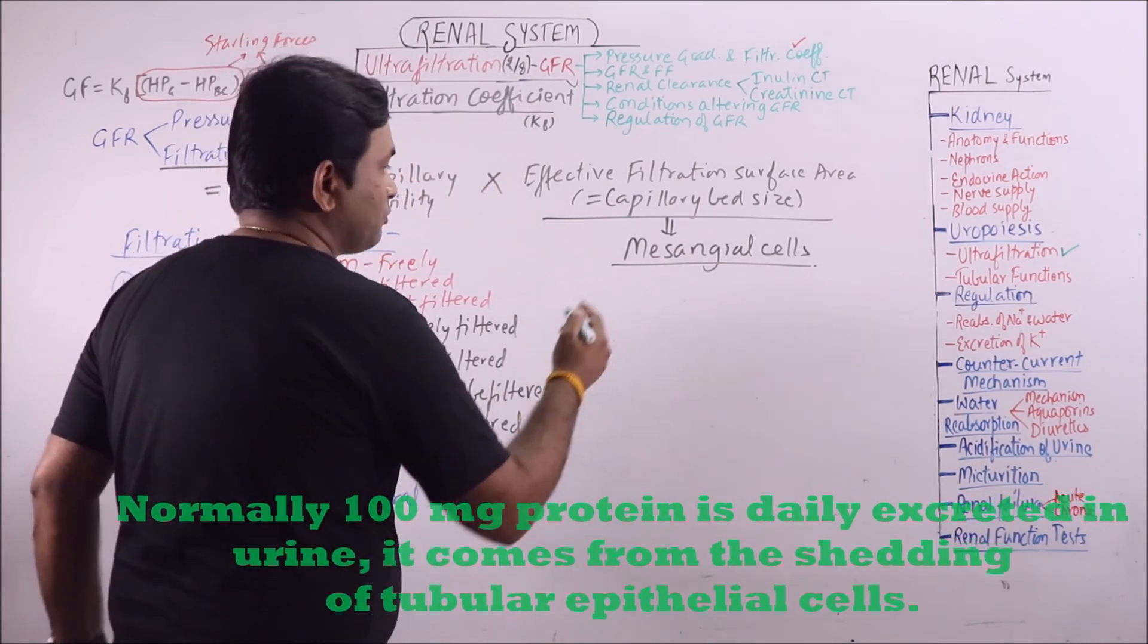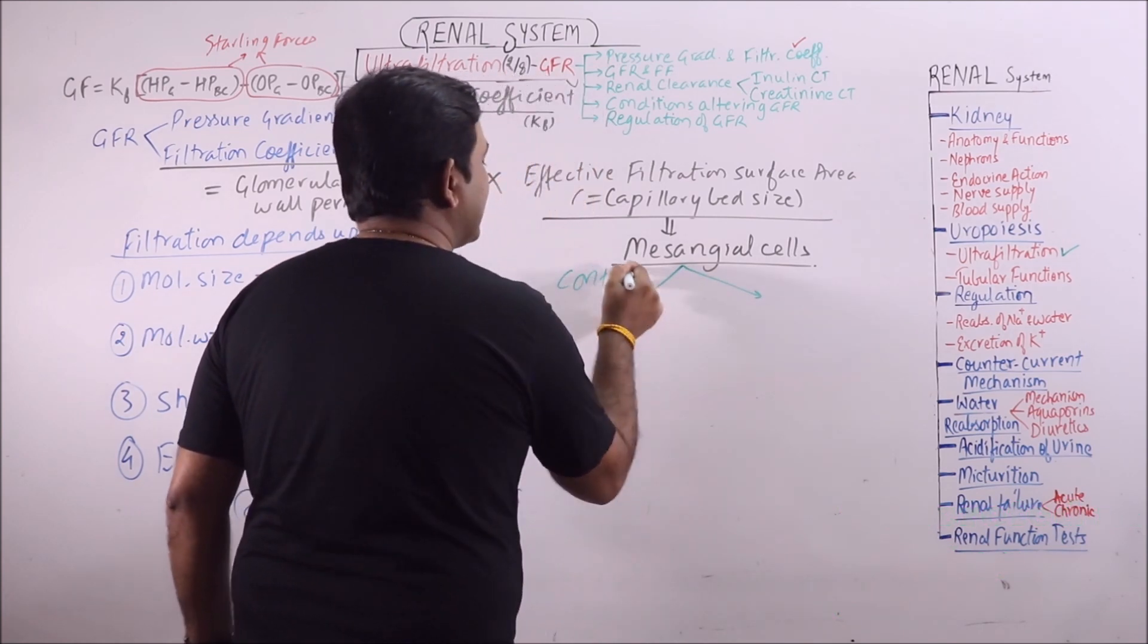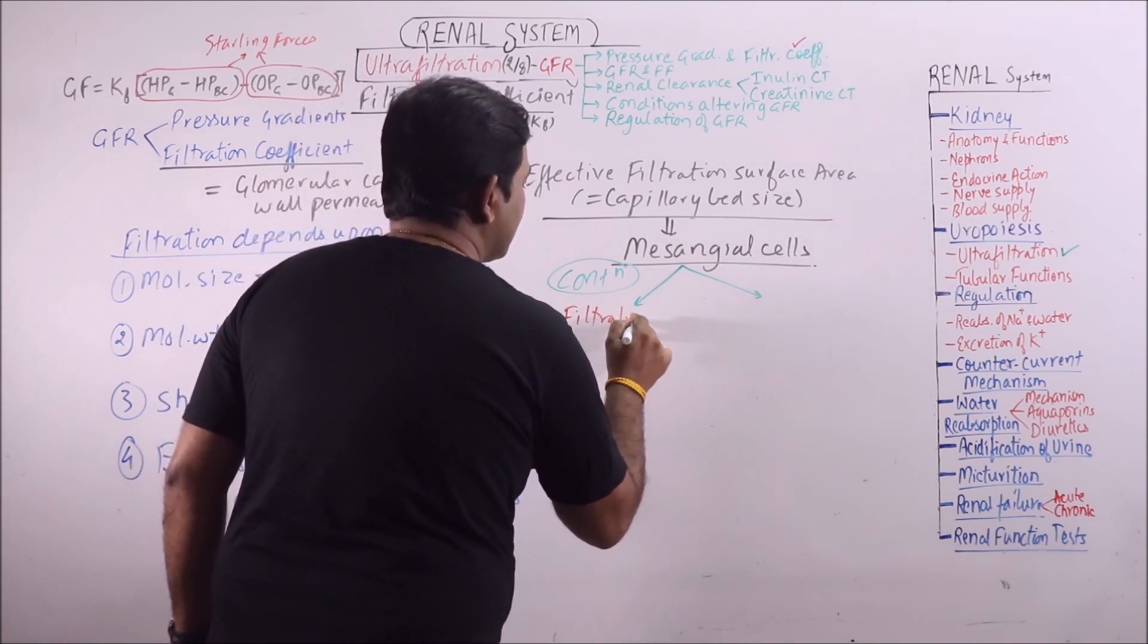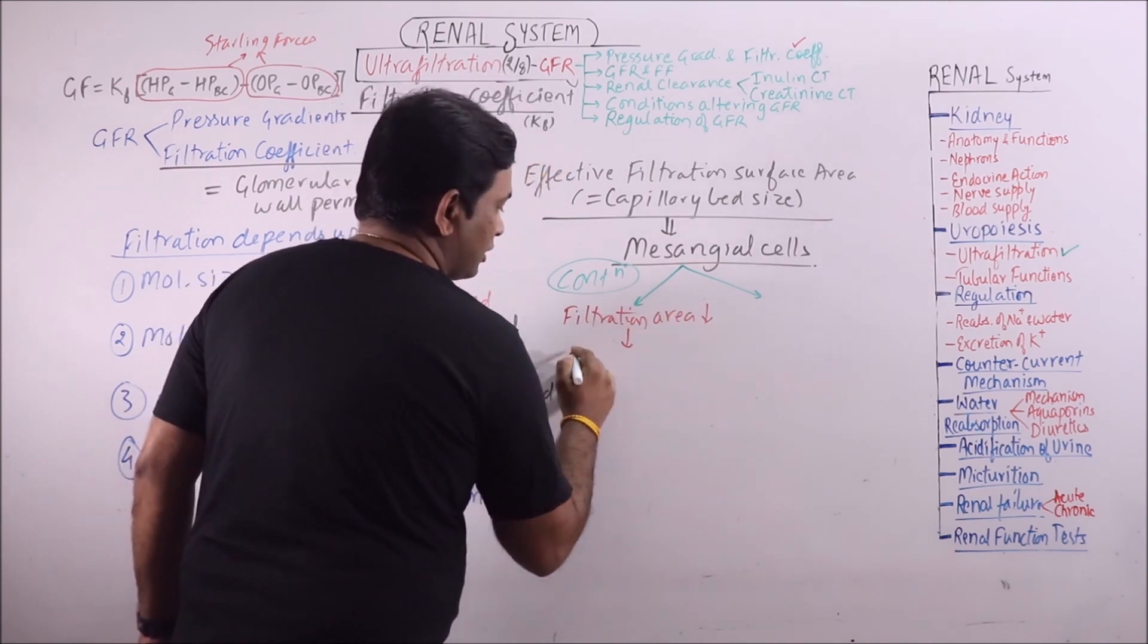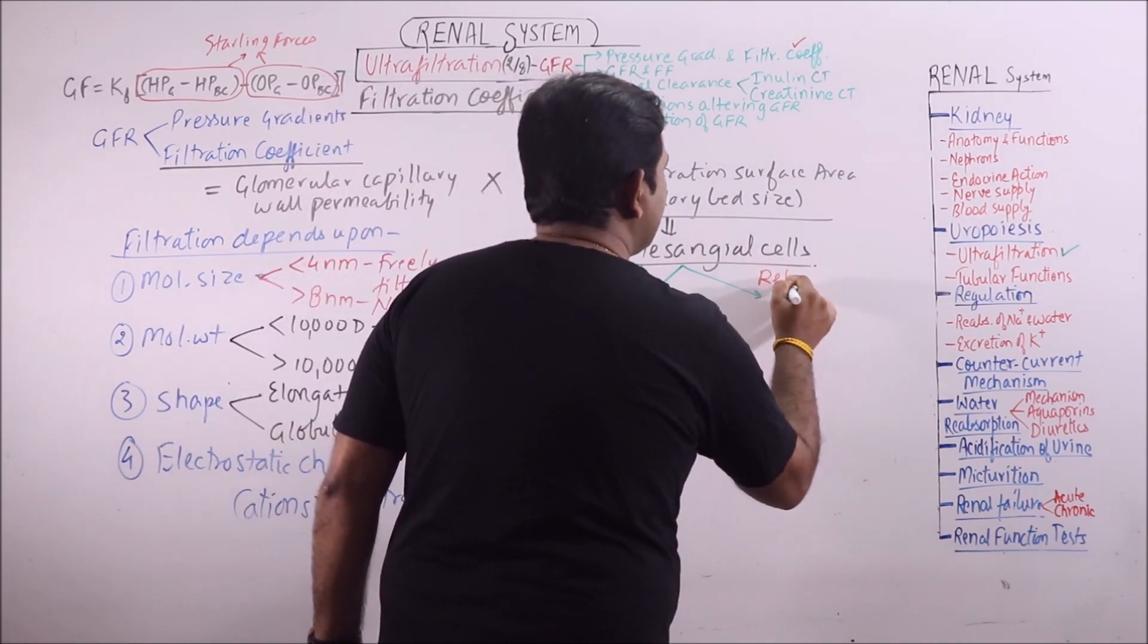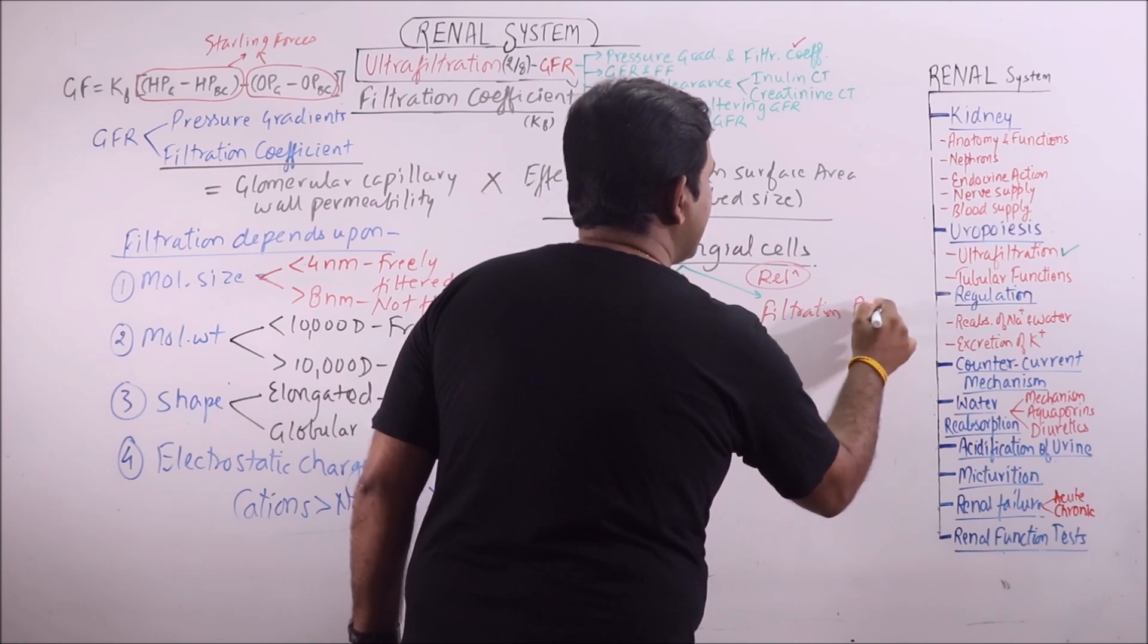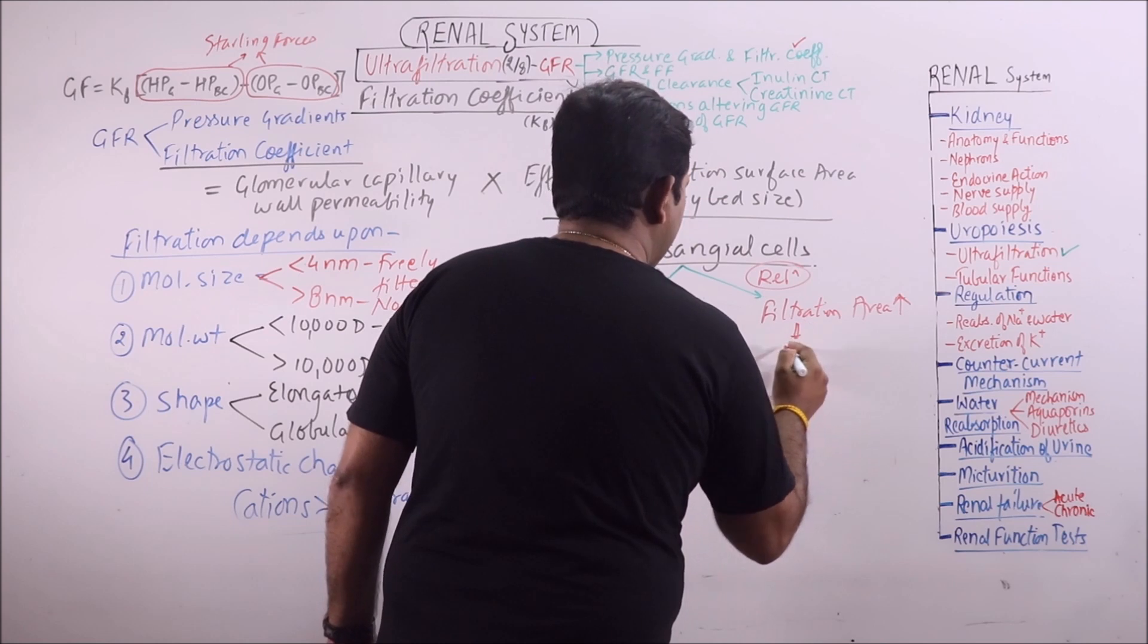The vice versa will increase the GFR. So if the mesangial cells show contraction, then the filtration area will reduce and the GFR will reduce. While if these show relaxation, then filtration area between the endothelial cells will increase. And as a result, GFR will also increase.